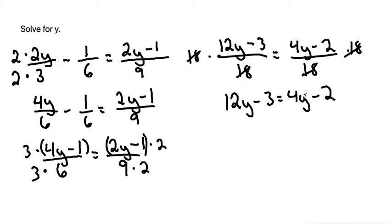So last is just to get the y by itself. So if we subtract both sides by 4y, we'll move all the y's to the left-hand side. 12 minus 4 is 8. So 8y minus 3 is equal to, bring down the negative 2, because it's canceled out.